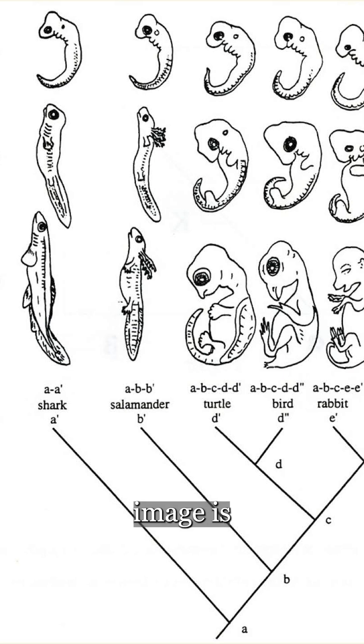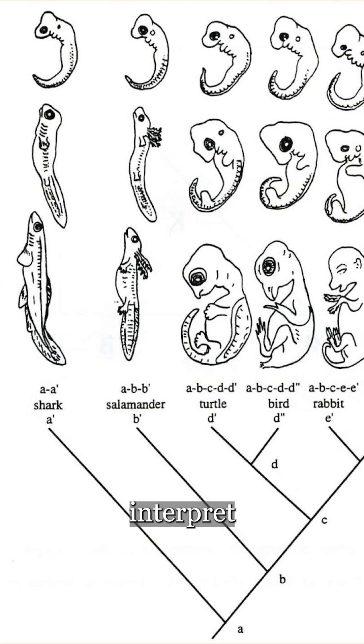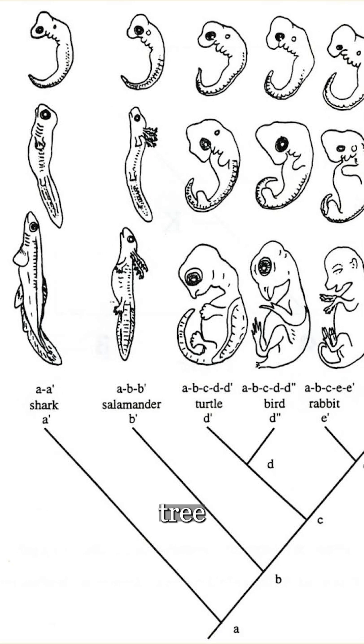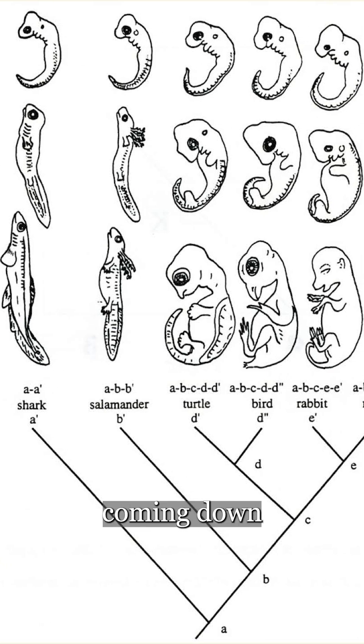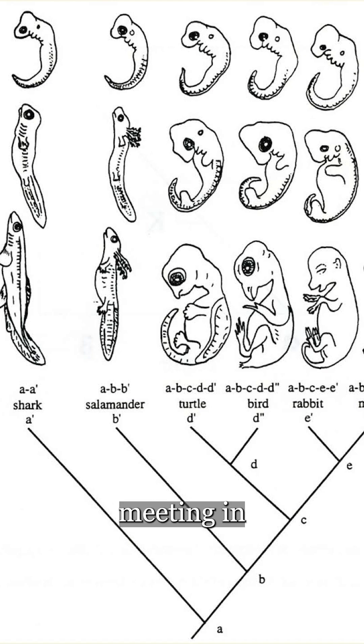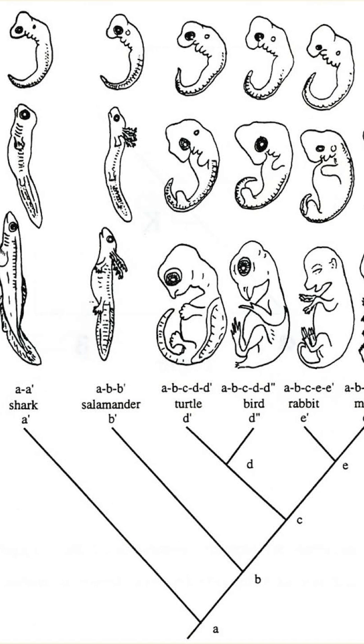And this image is a little bit hard to interpret because the evolutionary tree is sort of coming up from the bottom, and the developmental time is coming down from the top, and they're meeting in the middle.